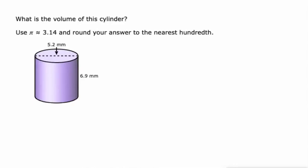Let's do another one like that. Volume equals pi r squared, the area of the base, times h. I will use 3.14. The radius is half of the diameter. So if the diameter is 5.2, the radius is going to be 2.6. And our height is 6.9 millimeters.